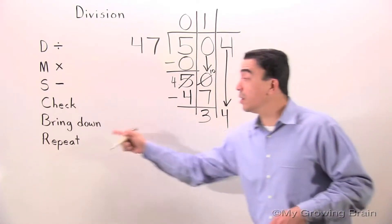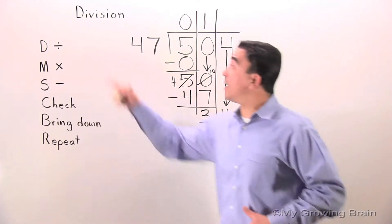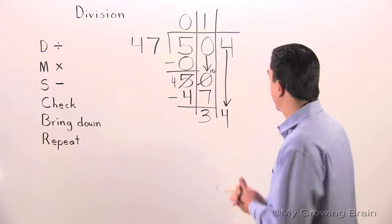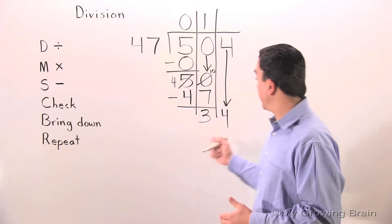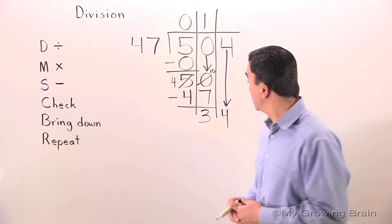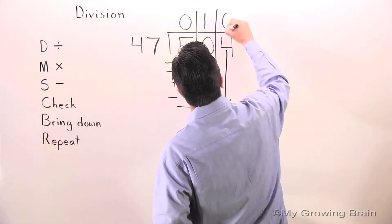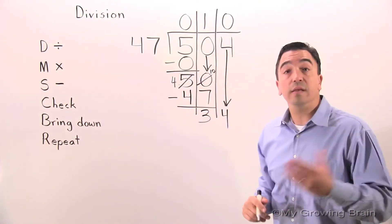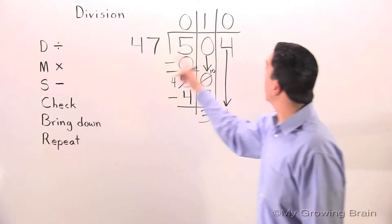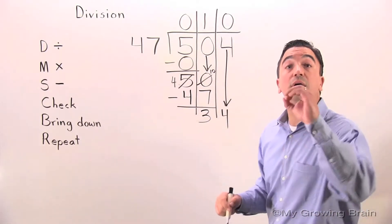Okay. Repeat the process all the way to the top. All right. Divide. 34 divided by 47. Can't do it. Use a zero. Next step, multiply. 47 times 0, 0.